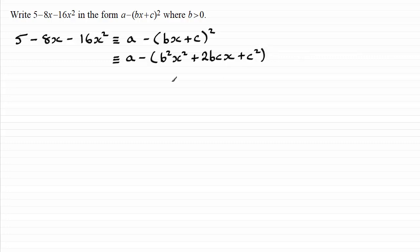And then what I'm going to do is expand the bracket and group up terms. I'm going to get a minus c squared. We'll start with the constant term, so that's a minus c squared. And then we'll look to the x term here. That'll be minus 2bcx.